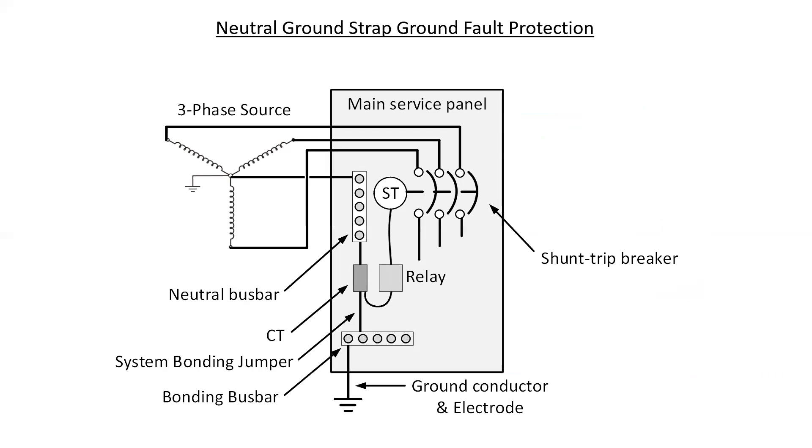This is a neutral ground strap for ground fault protection. What you can see is there is a single CT and that single CT is actually mounted on the system bonding jumper. It then supplies a relay and the relay then connects to the shunt trip mechanism in the breaker. And the relay and the CT and the shunt trip will all be set to a specific current value in order to initiate the automatic tripping or opening of the circuit breaker.